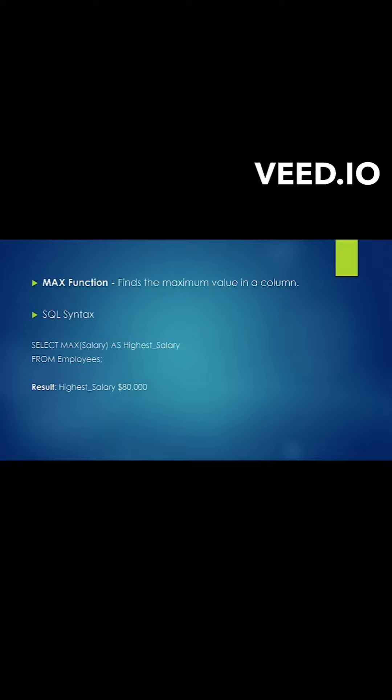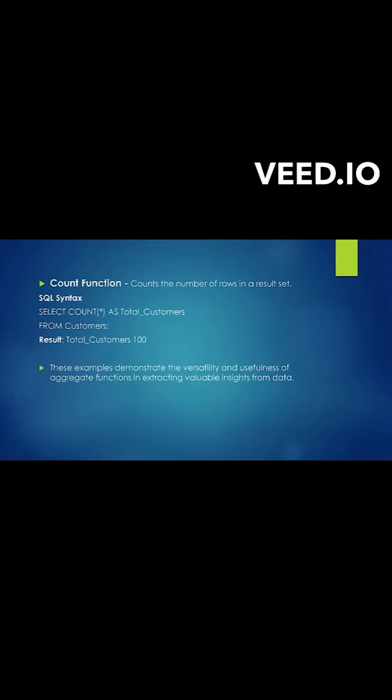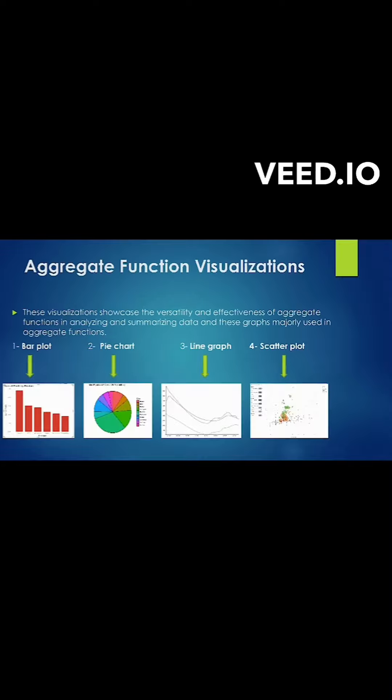Maximum function finds the maximum value of the column. Minimum function returns the smallest element in the list, and we can see the example as well. Count function is a handy task for counting how many times a specific result appears.